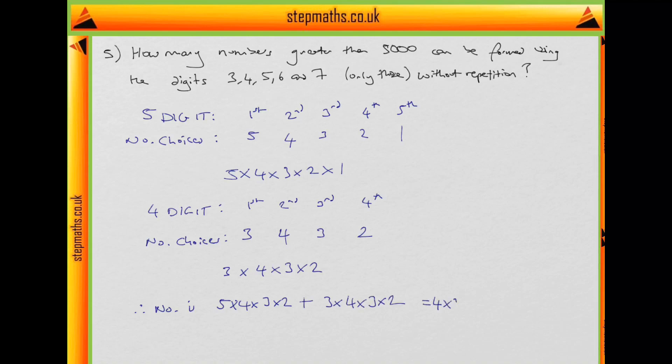Well, that's equal to 4 times 3 times 2 multiplied by 5 plus 3. So that's 4 times 3 times 2, which is 12 times 2, which is 24 times 5 plus 3, which is 8. And that gives us a total of 192 possible numbers.